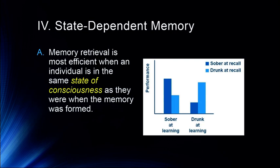This match between encoding and retrieval leads to other interesting results, some legendary on college campuses — like study drunk, test drunk. This is what we call state-dependent memory. First, let me be very clear: best performance is sober-sober. State-dependent memory is that memory retrieval is most efficient when the individual is in the same state of consciousness as when the memory was formed. So if you study sober, test sober. The worst performance is being drunk at learning and sober at recall.